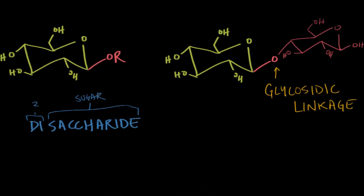With disaccharides, most commonly the glycosidic linkage forms between the anomeric carbon, or C1. So here we've got C1 of the first sugar, and then C4 of the second sugar — so we call this a 1,4 glycosidic linkage.